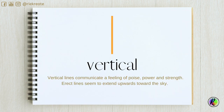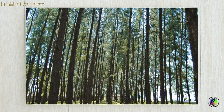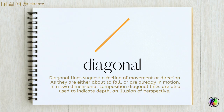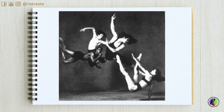Vertical lines run from top to bottom or north to south. Vertical lines communicate a feeling of power and strength, and seem to extend upwards towards the sky. Diagonal lines suggest a feeling of movement or direction — they are either about to fall or are already in motion.